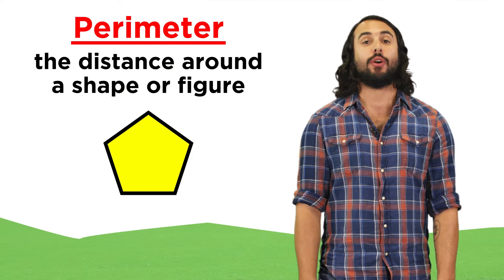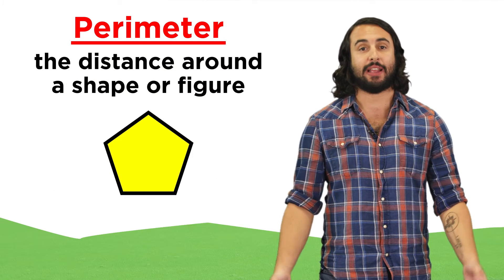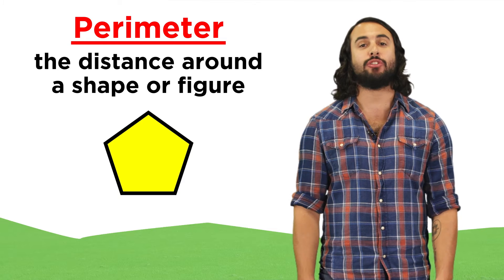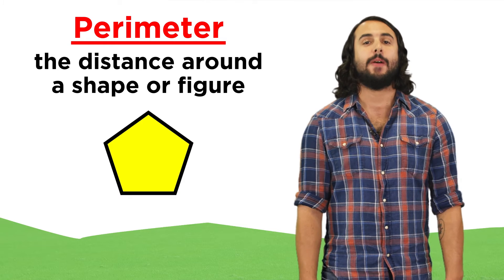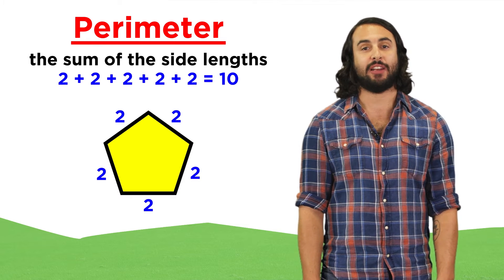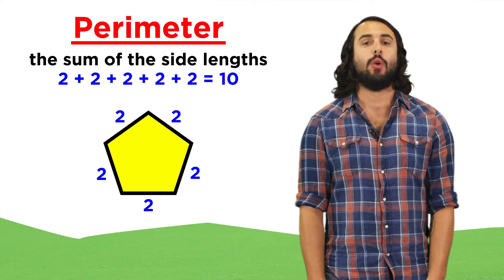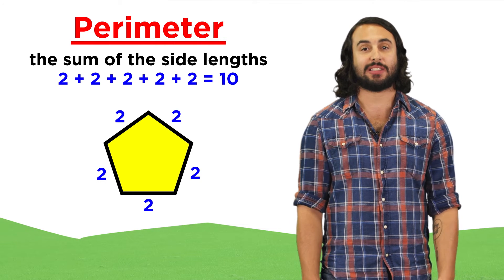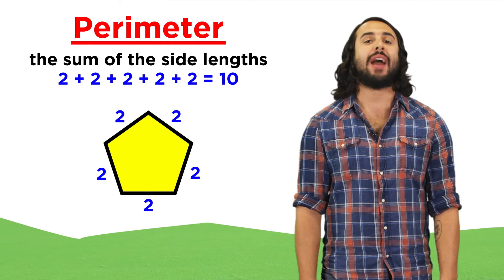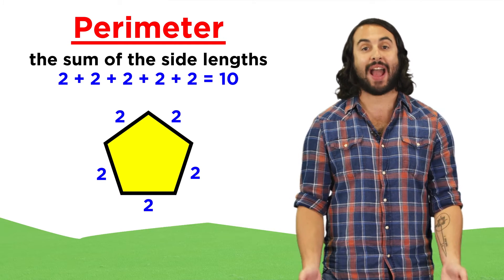In geometry, the word perimeter has a similar meaning. It's the distance around a shape or figure. Finding the perimeter of a polygon is usually pretty easy, we just have to add up the lengths of all the sides, and that will give us the distance around the shape.